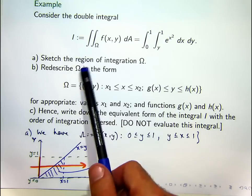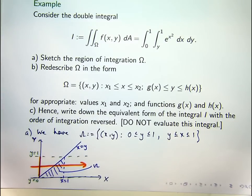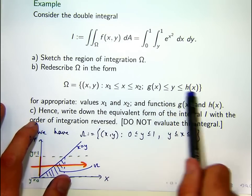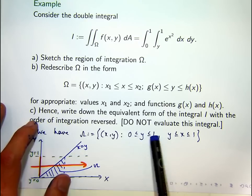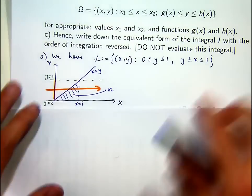Part B. Redescribe omega in the form where x is between two constants and y is between two functions here. So it's a little bit different here. Here we've got y between two constants and x between two functions, where actually one of the functions is constant. So let's see if we can accommodate that.